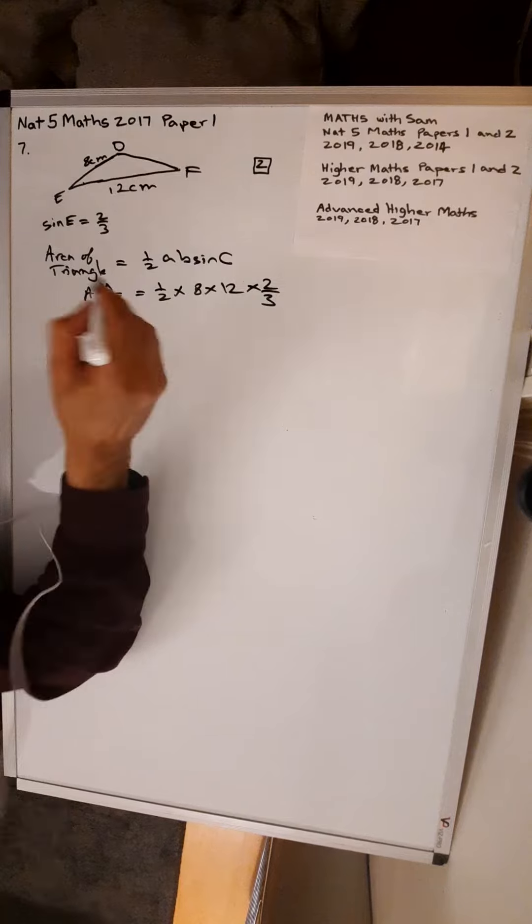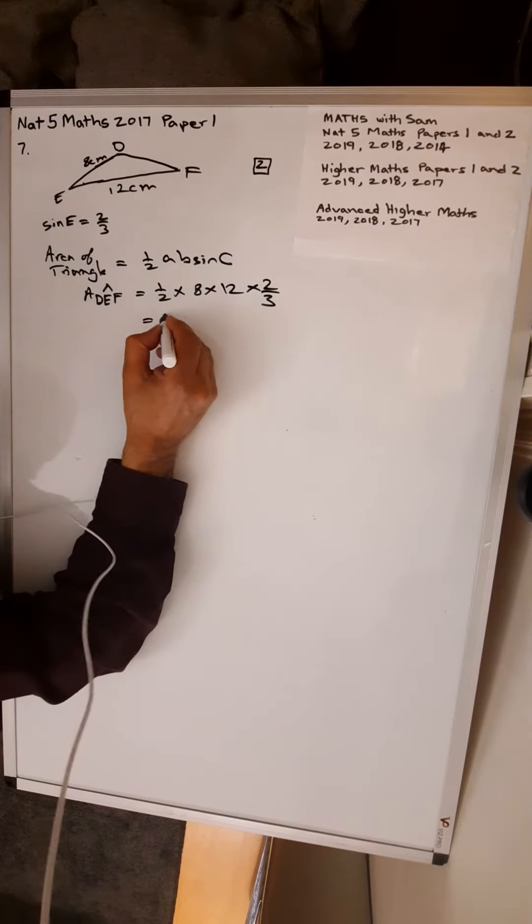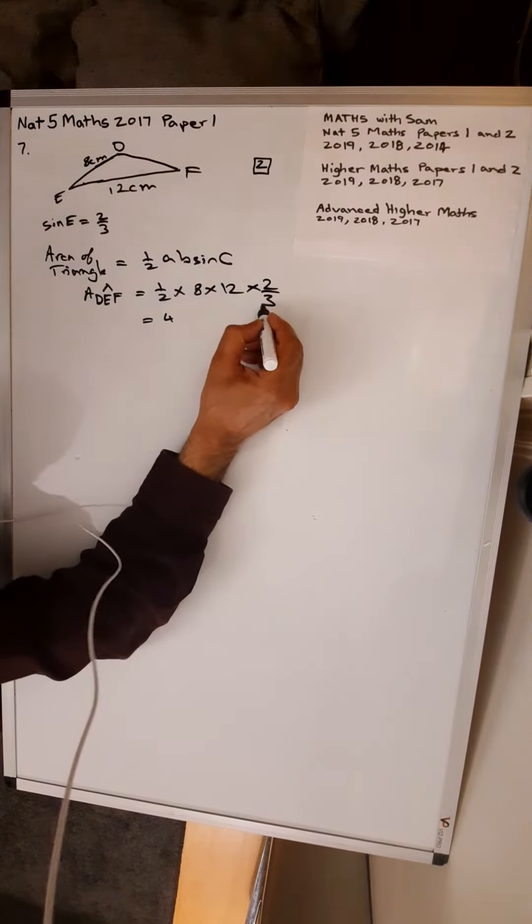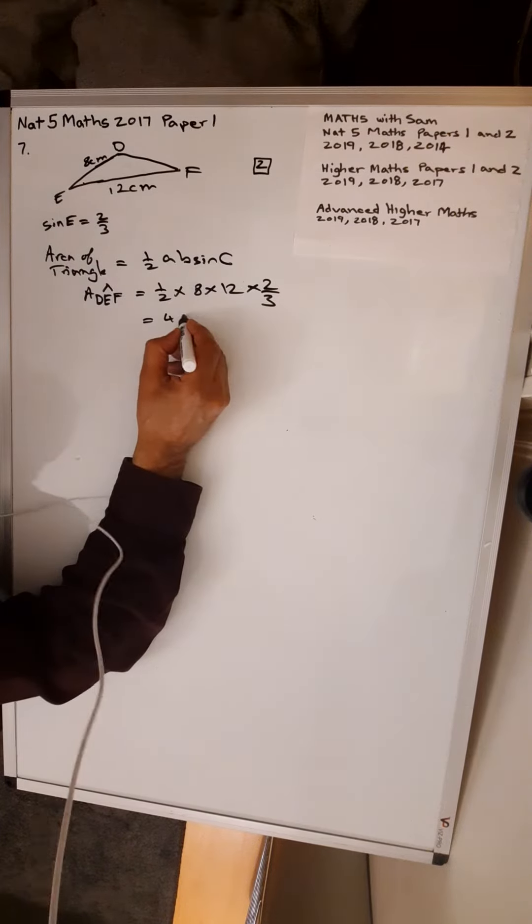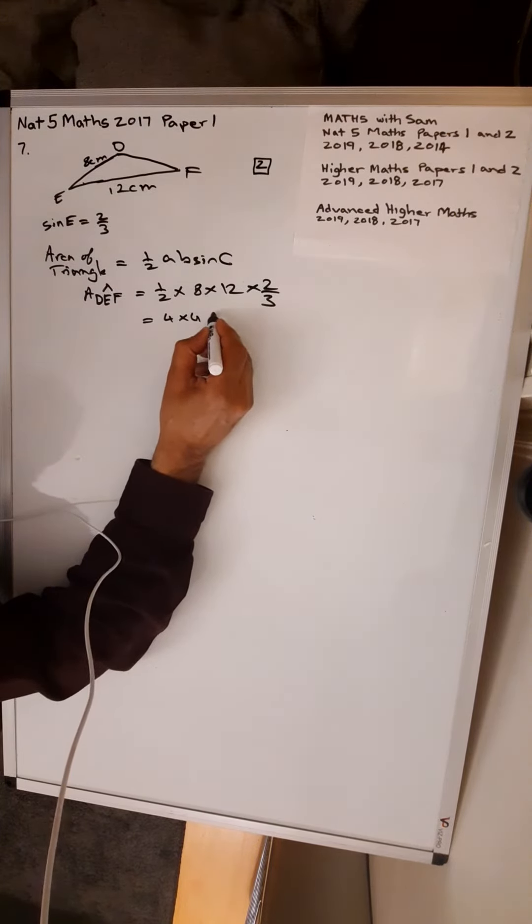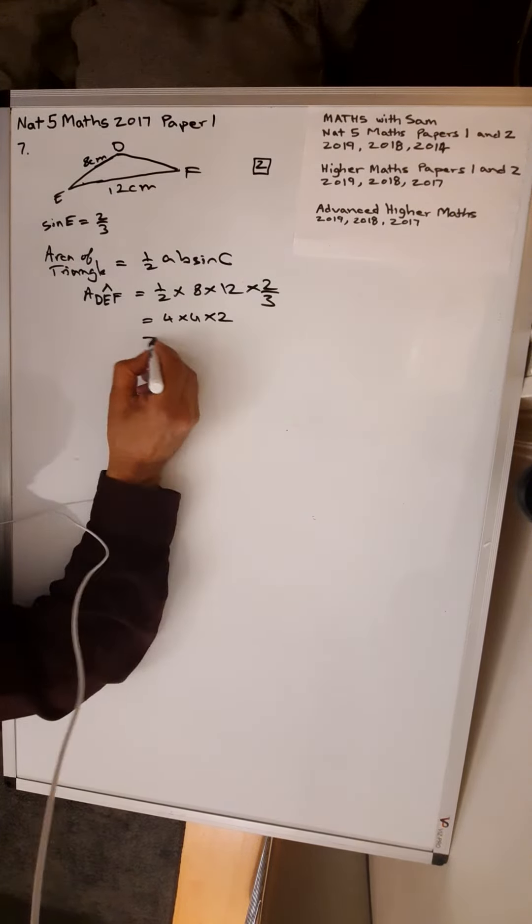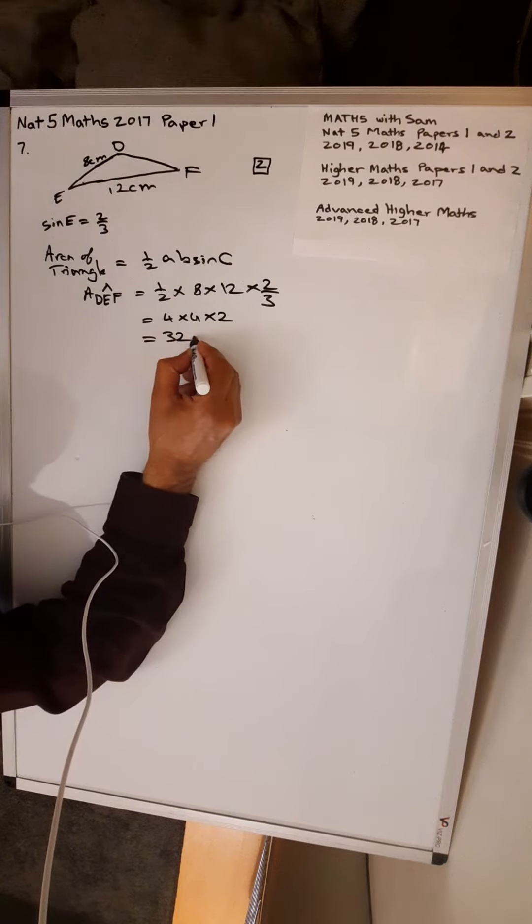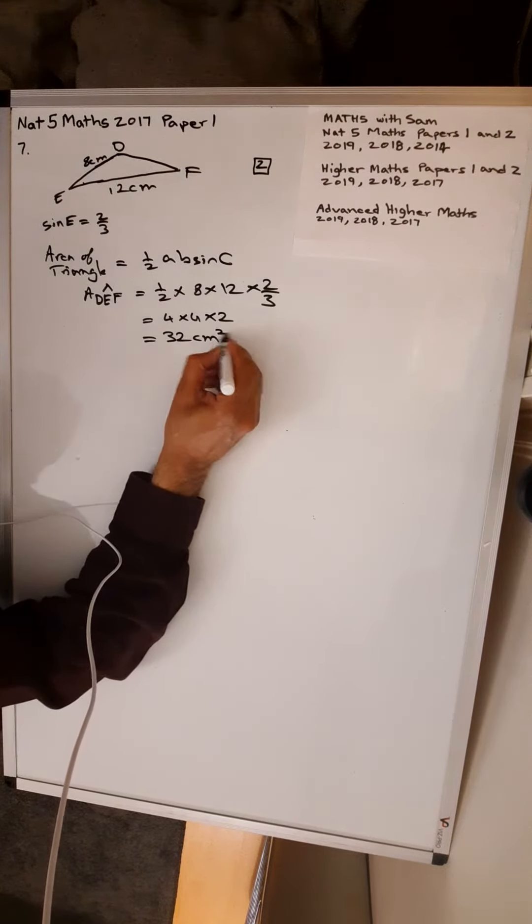Which gives you 4. 3 into 12 goes 4 times, 4 times 4 times 2, which gives you 32 centimeters squared.